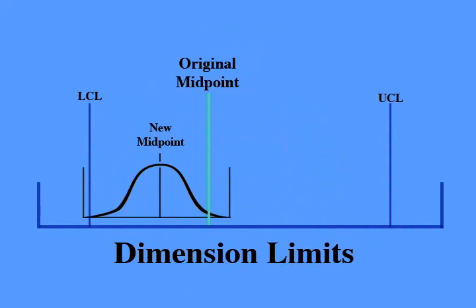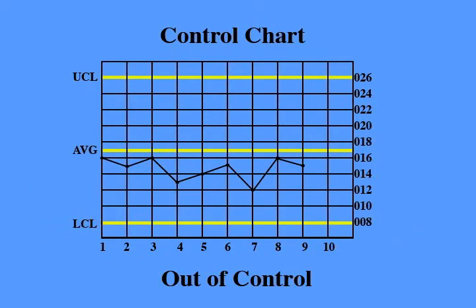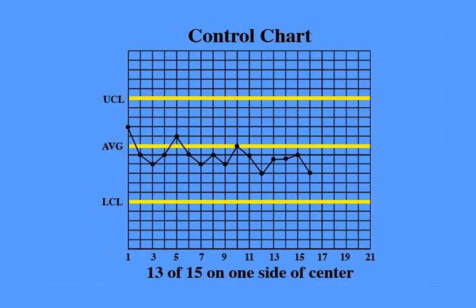The second condition that indicates the process is going out of control is called midpoint shift. Midpoint shift shows up in two ways. First, it would be indicated by plotting nine or more points in a row on one side of the center line. Second, midpoint shift can also be detected when you find 13 out of 15 points falling on the same side of the center line.